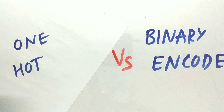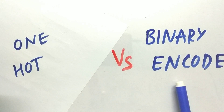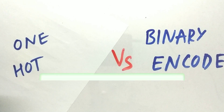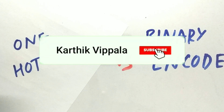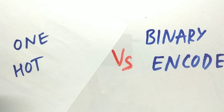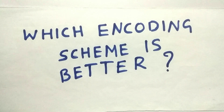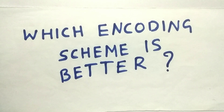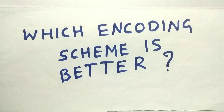Welcome back to another interesting topic. Today's topic is on one-hot encoding versus binary encoding. Before going to the topic, make sure you hit that subscribe button and turn your notifications on, and if you have any doubts, comment down below — I'll respond within 24 hours. So which encoding scheme is better: one-hot or binary encoding? To know that, let's take an example, discuss the advantages and disadvantages of both schemes, and then come to a conclusion.